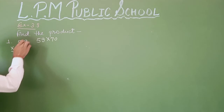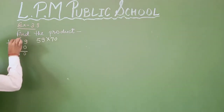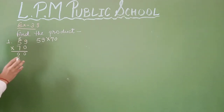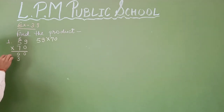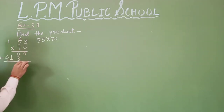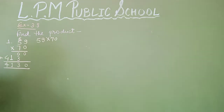Now multiply the 10s: 7 nines are 63, 6 carry. And 7 fives are 35, plus 6 carry gives 41. Now add the products: 0, 0 plus 3 gives 3, and 1 and 4. So the answer of this question is 4,130.